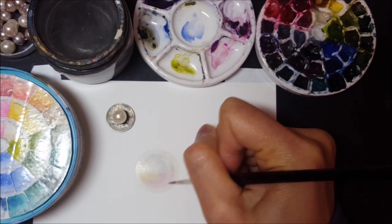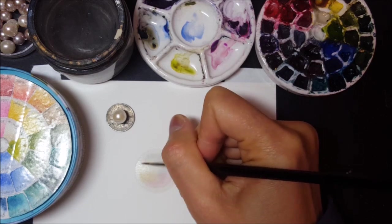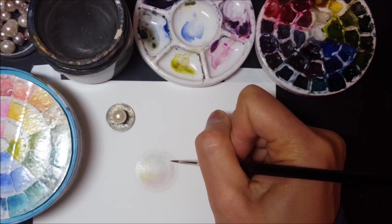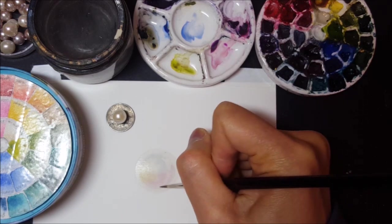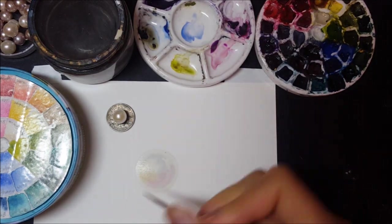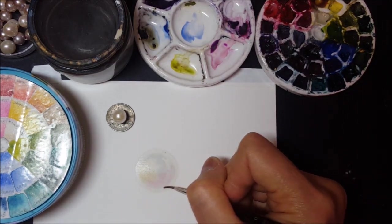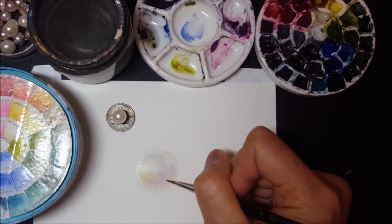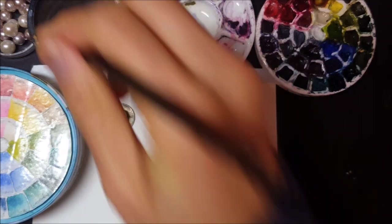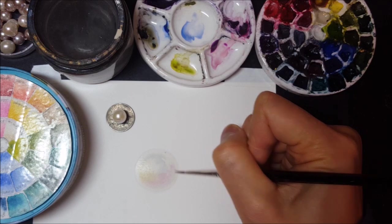And you notice, as I did with the bubble tutorial the other day, I'm moving mostly in a circular pattern with my brush. A circular way that follows the edges, follows the surface of my object.